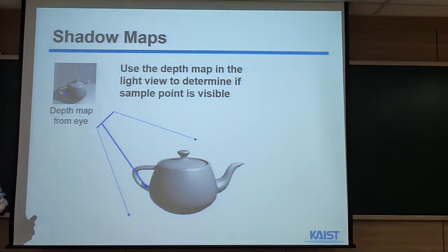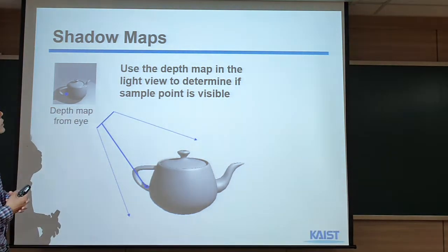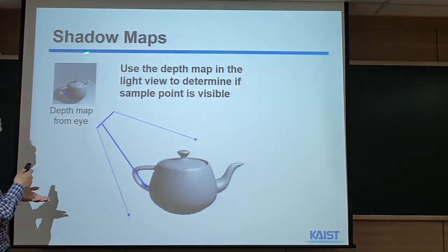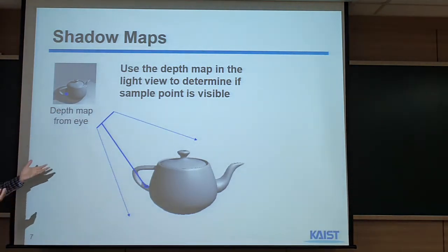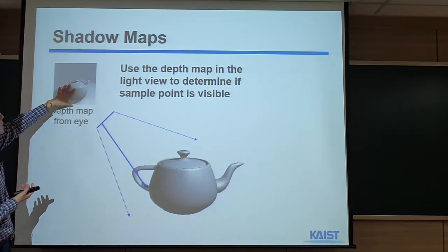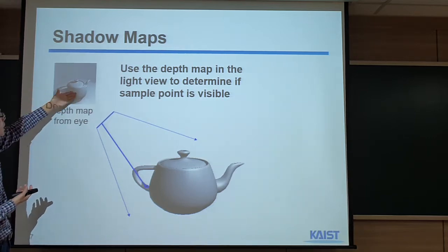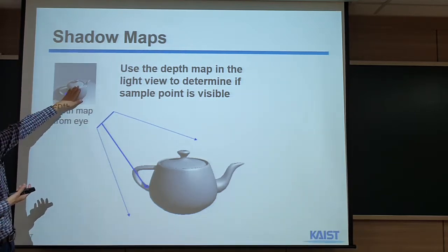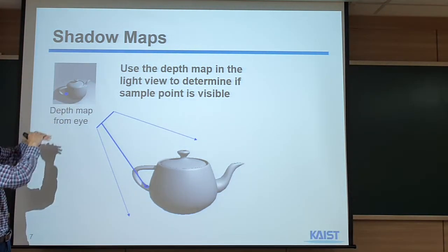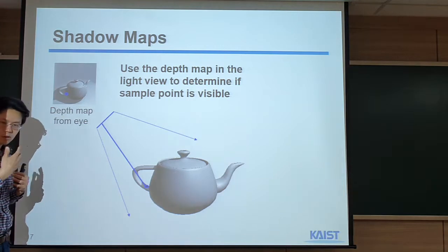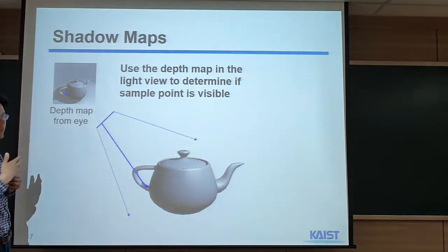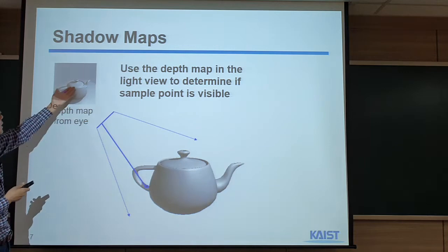Another common way of using texture mapping for lighting is the shadow map. So far, we talked about this concept: we can rasterize a triangle, and when we rasterize this triangle, we also consider light. We compute the ambient, diffuse, and specular terms — we perform the Phong illumination and compute the color. But suppose there's a light here. You can see that another part of this teapot blocks the light, so we cannot get energy from there — this region is actually in the shadow region.